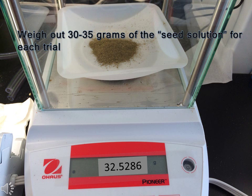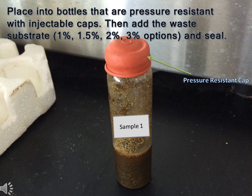Weigh out 30 to 35 grams of the seed solution for each trial you will be doing. Place each sample into its corresponding vial, then add varying amounts of the waste substrate. Seal the vial with the pressure resistant cap.